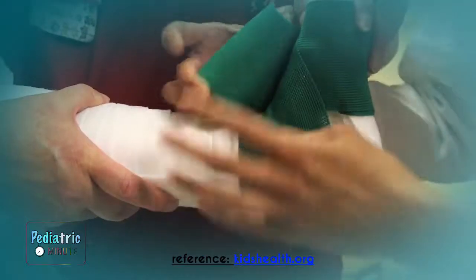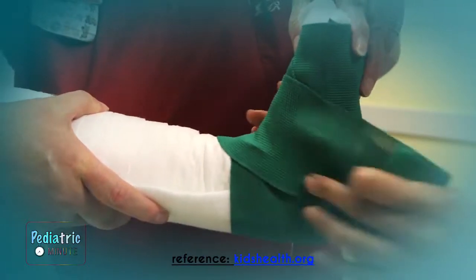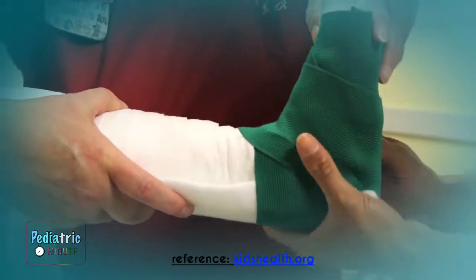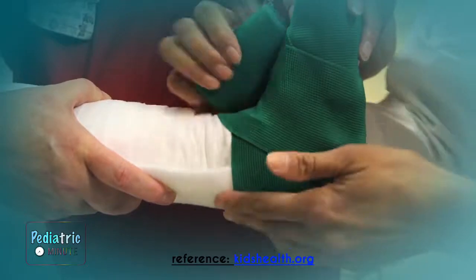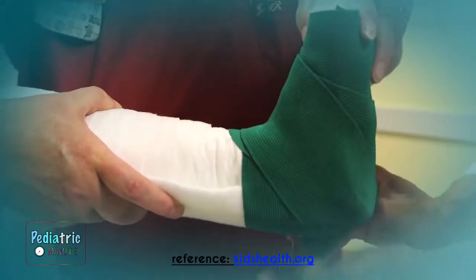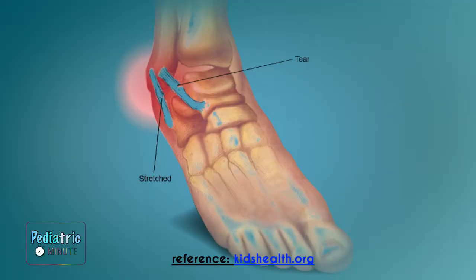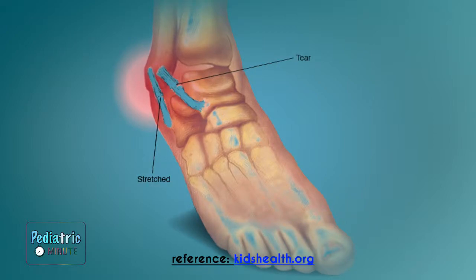So when someone sprains their ankle, that means they've overstretched or torn one of the ligaments in their ankle, but the bones are still intact. A fracture, on the other hand, means that the bone itself has been broken.